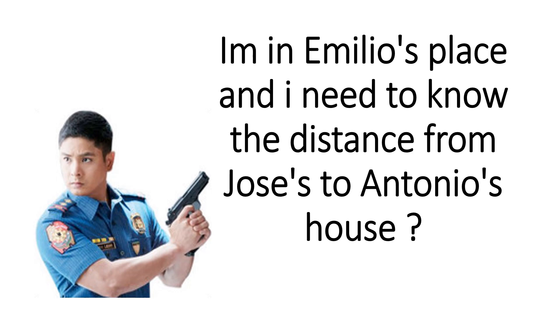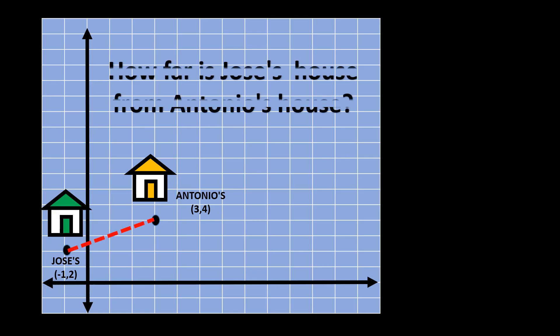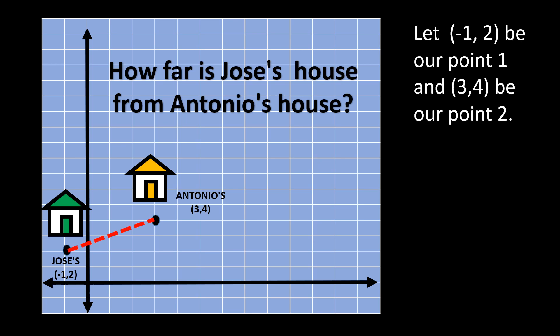Okay, let's go to our last example. Cardo is asking for the distance from Poses to Antonio's house. Let point 1 be negative 1, 2, and point 2 be 3, 4. Again, you can swap the points — just make sure you know which is x sub 2 and x sub 1 so you don't get confused. So x sub 1 is negative 1, y sub 1 is 2, x sub 2 is 3, and y sub 2 is 4.